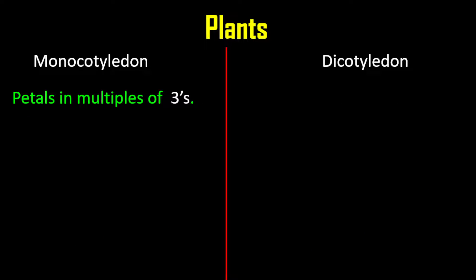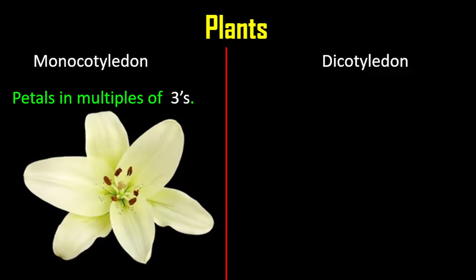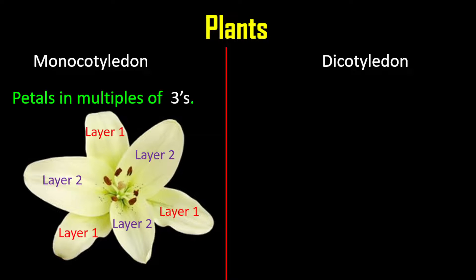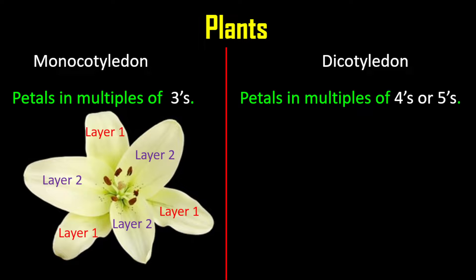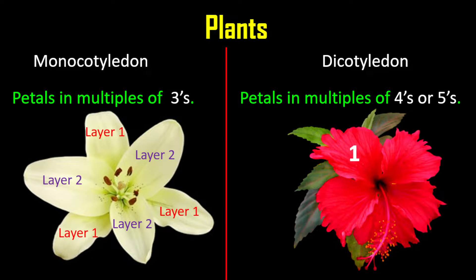For monocotyledon, the petals are in multiples of threes. You may see six petals, but they are in multiples of threes — in levels of threes. Notice those marked in red are the lower level, and on top of those is another layer marked in purple. Only three petals are in each layer, so regardless of the total number of petals, they must be grouped into layers of threes. For dicotyledon plants, they are plants with petals in multiples of fours or fives. Notice the hibiscus plant has five petals in one level; if there are more levels, you may see five petals in each level.